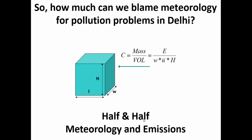So how much can we blame meteorology for pollution problems in Delhi? It's a half and half answer — it's both meteorology and emissions. Meteorology contributes through stagnant conditions and lower inversion layers that jack up concentrations. And emissions are almost double in winter months compared to summer months, giving you a higher numerator and a lower denominator, which increases overall concentration in winter. We can't do anything about meteorology — it will be there in a cycle year after year. But we can do something about emissions by controlling them in these key sectors, which can lead to lower annual averages for compliance and health benefits.